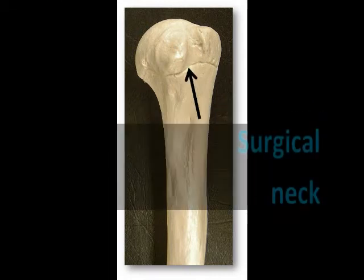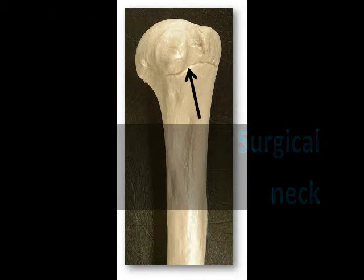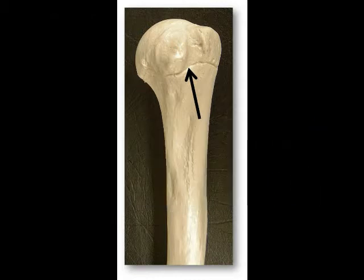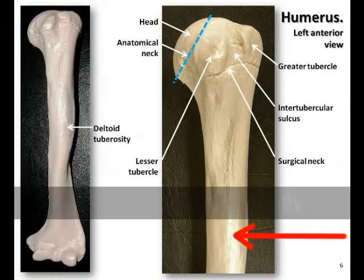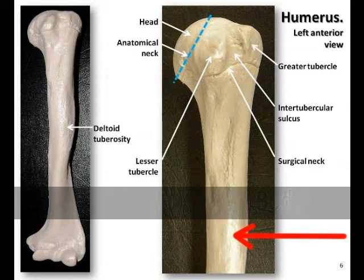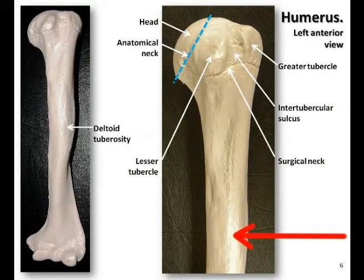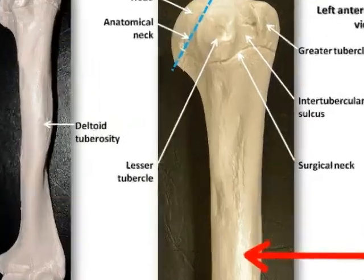Just distal to the tubercles is the surgical neck, a narrow area of the humerus where the head tapers to the shaft. It is so named because this is the common site of fractures to the humerus. The body or shaft is more cylindrical at the proximal end of the bone, then becomes more triangular, and then takes on a broader and flatter shape towards the distal end.